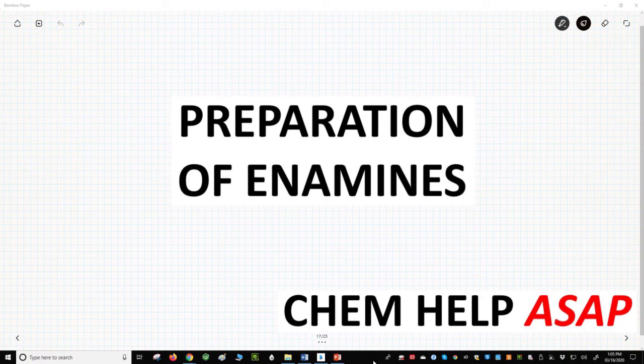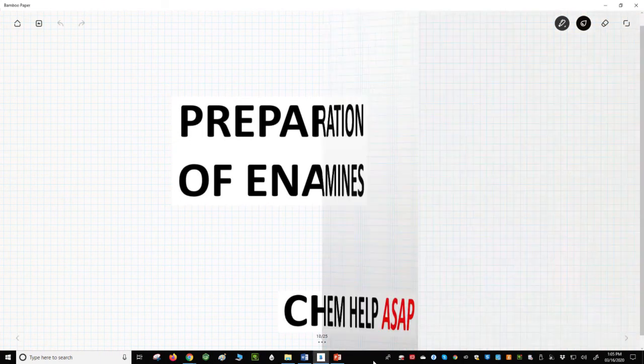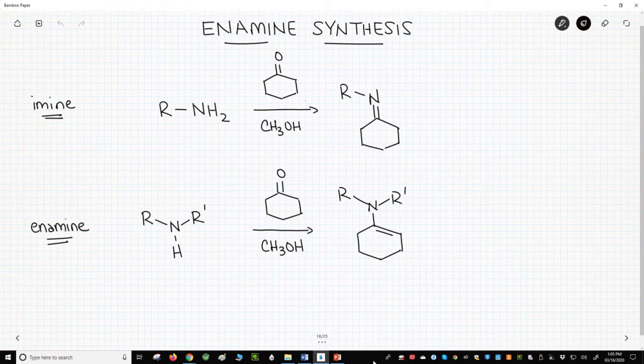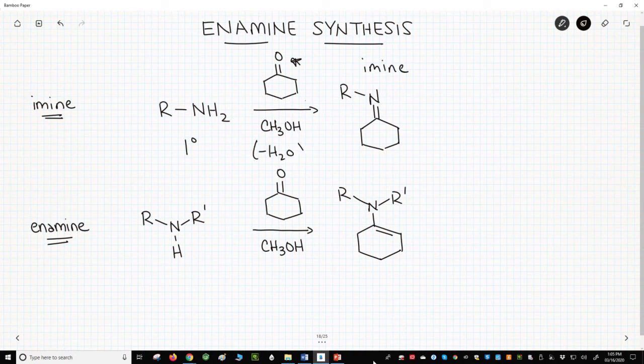Enamines are made from secondary amines and ketones or aldehydes. On top of the slide is an imine synthesis. We've seen this in a previous video in this playlist. A primary amine reacts with a ketone or an aldehyde to make a new C-N double bond, the imine, with loss of water.